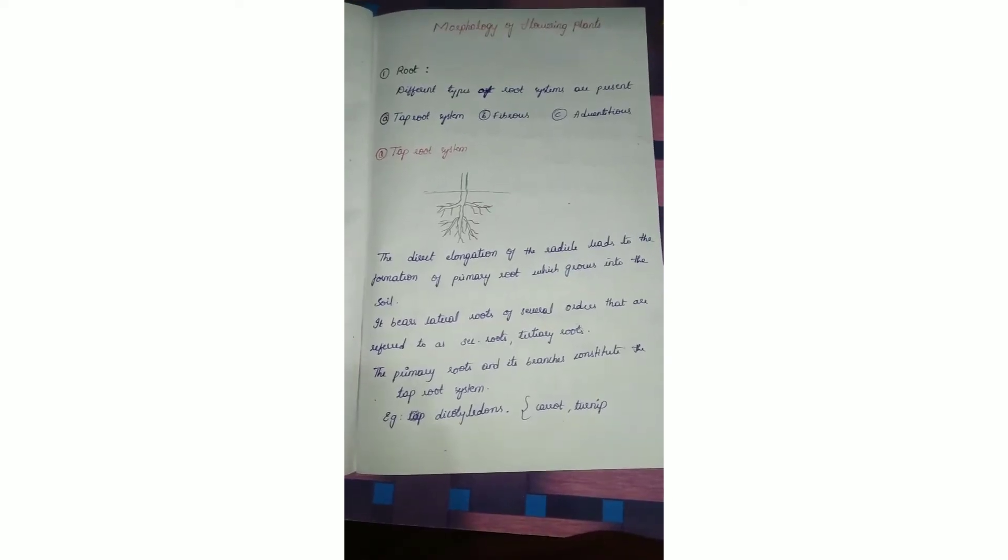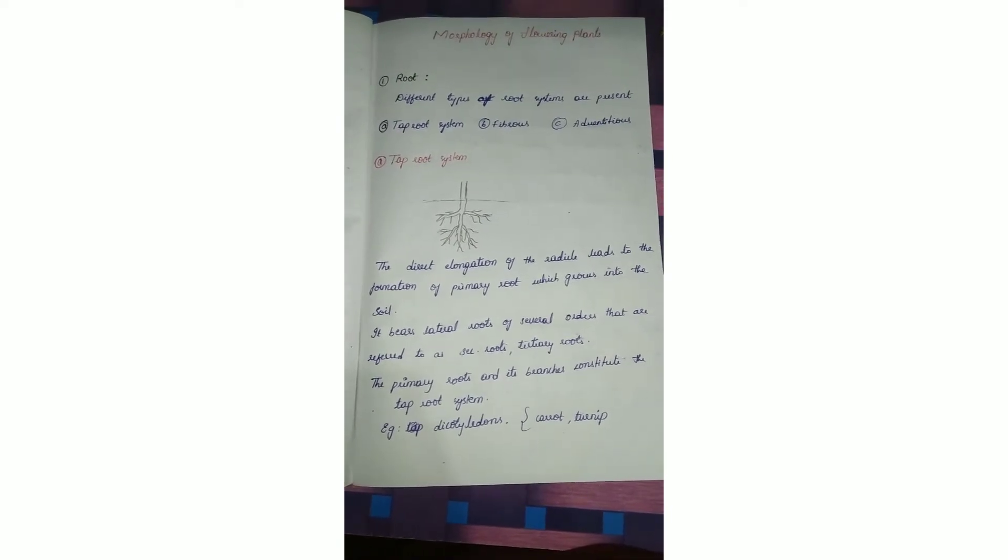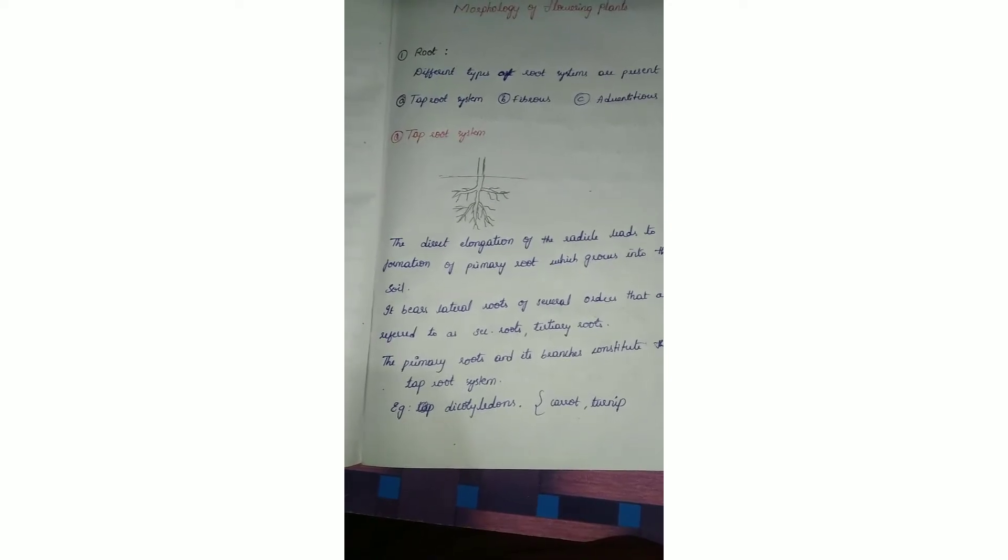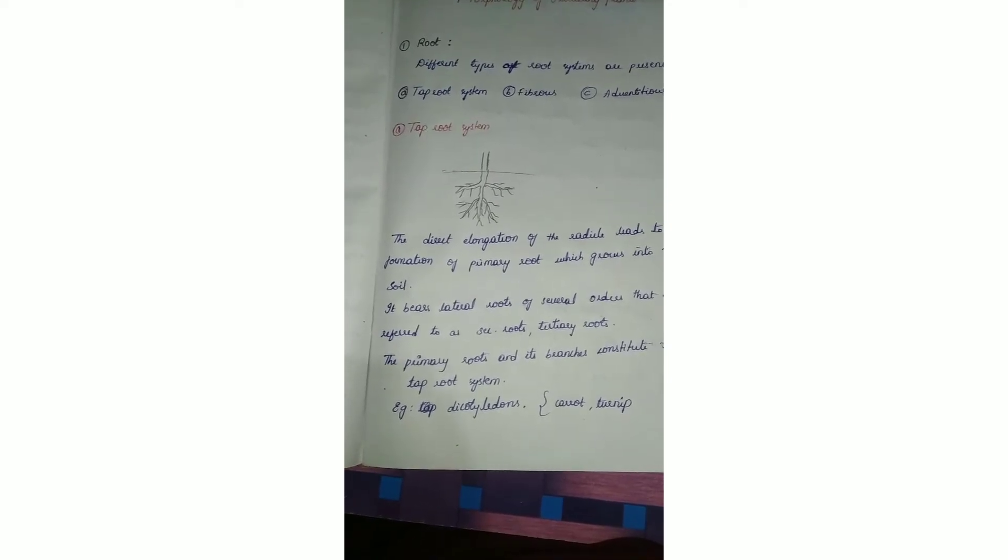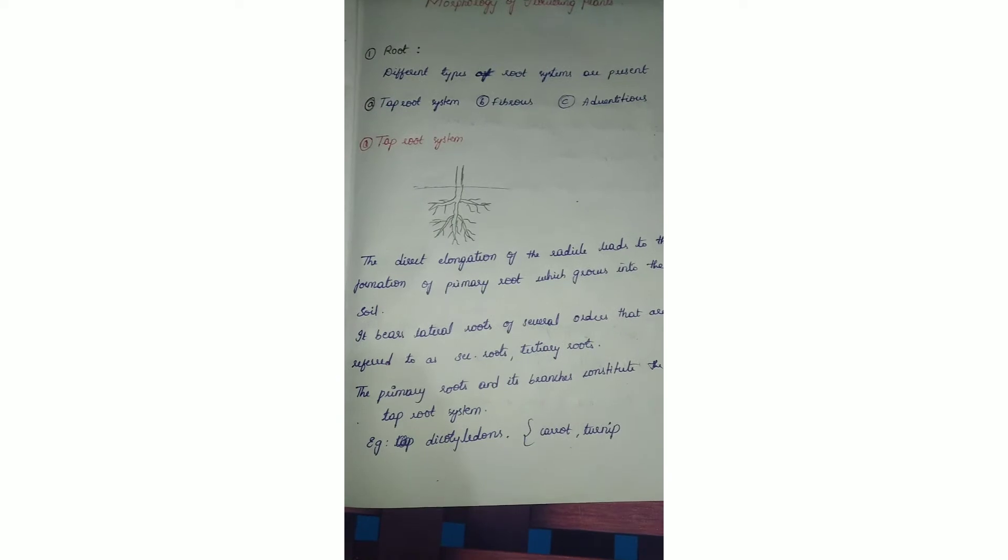The first topic is root. First we will see different types of root systems: tap root system, fibrous root system, and adventitious root systems. Roots provide nutrition, and in some plants roots synthesize growth regulators which help plants grow well with healthy conditions.